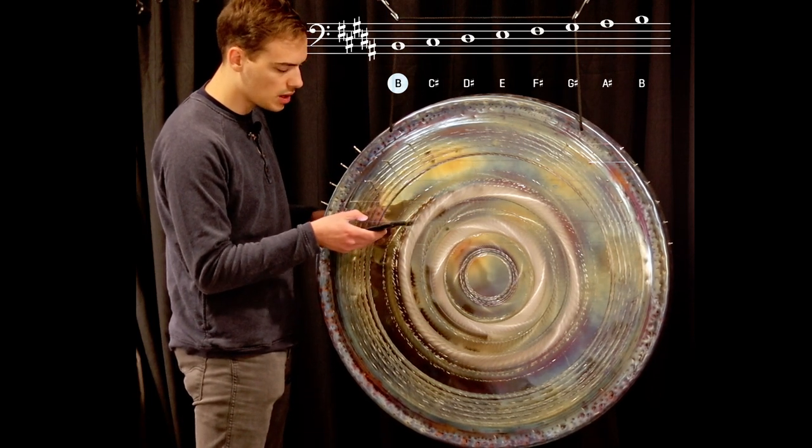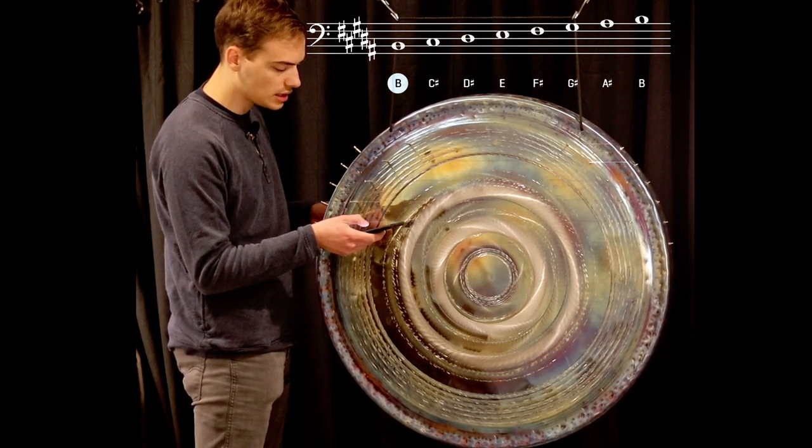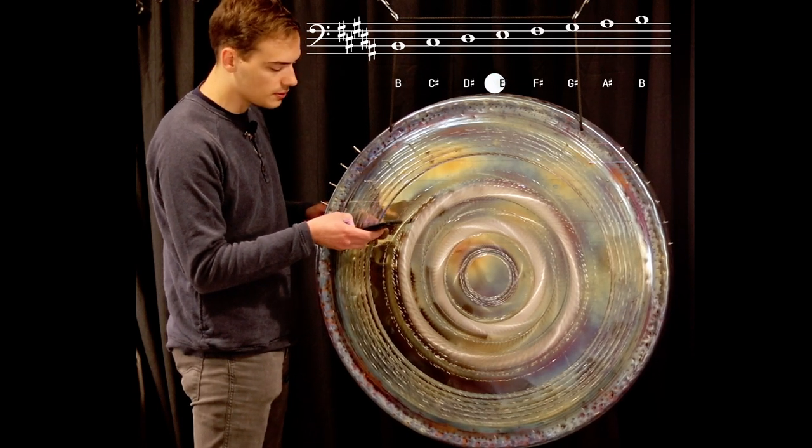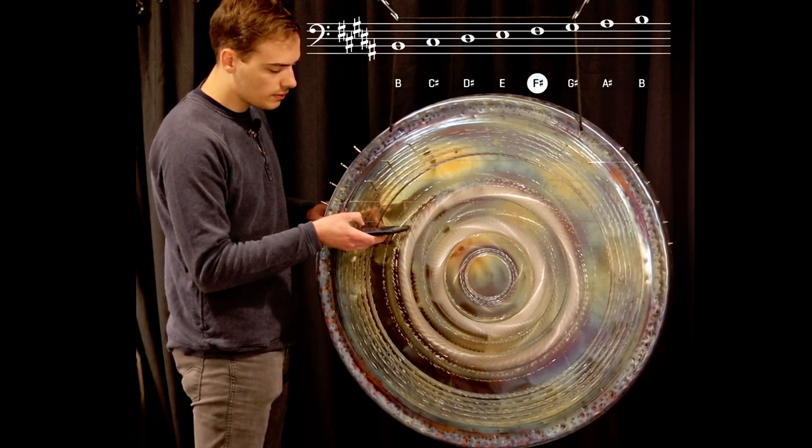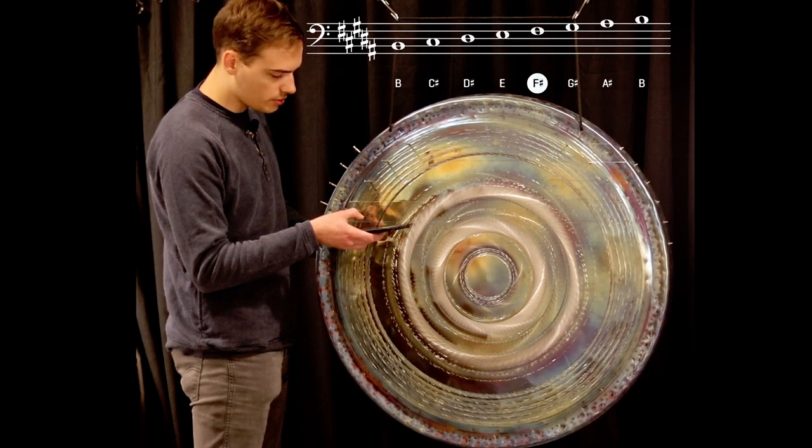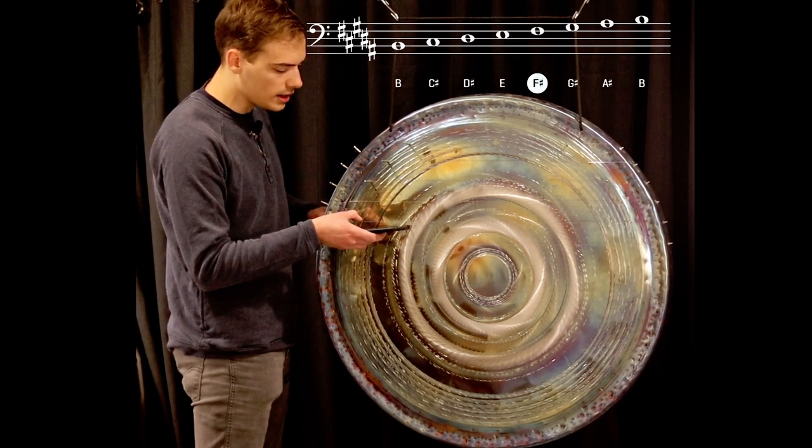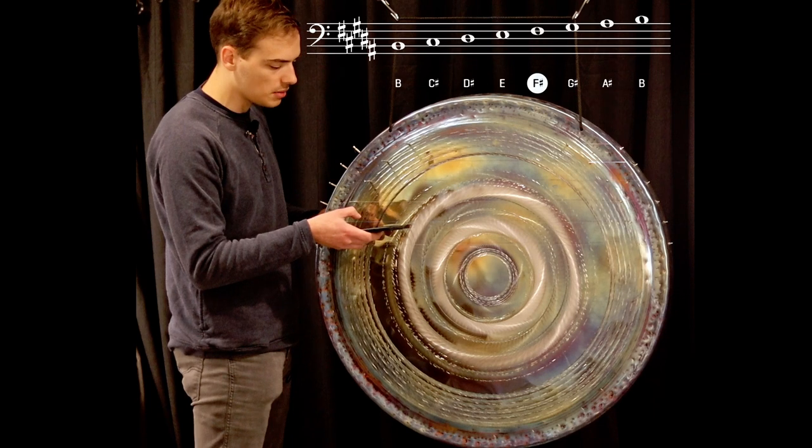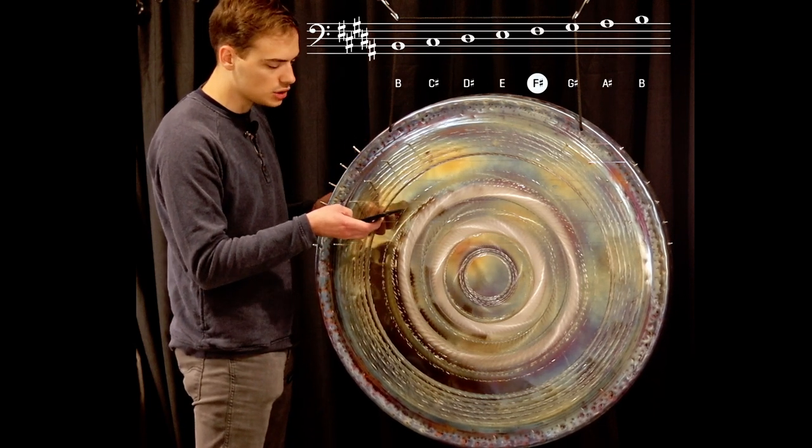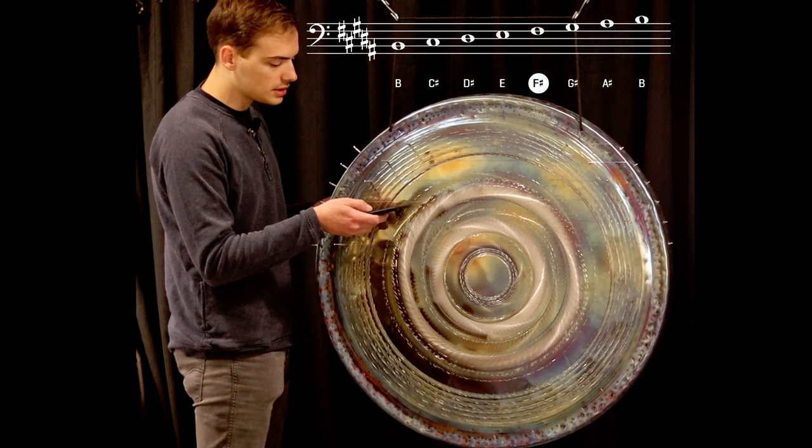And so next, we're going to go up to our second string. And the second string is going to be the fifth. And so the fifth is an F sharp 3, which we're just about at already, because we spent that time earlier, just putting a little bit of tension on the strings. Then we're going to go up to the sixth.